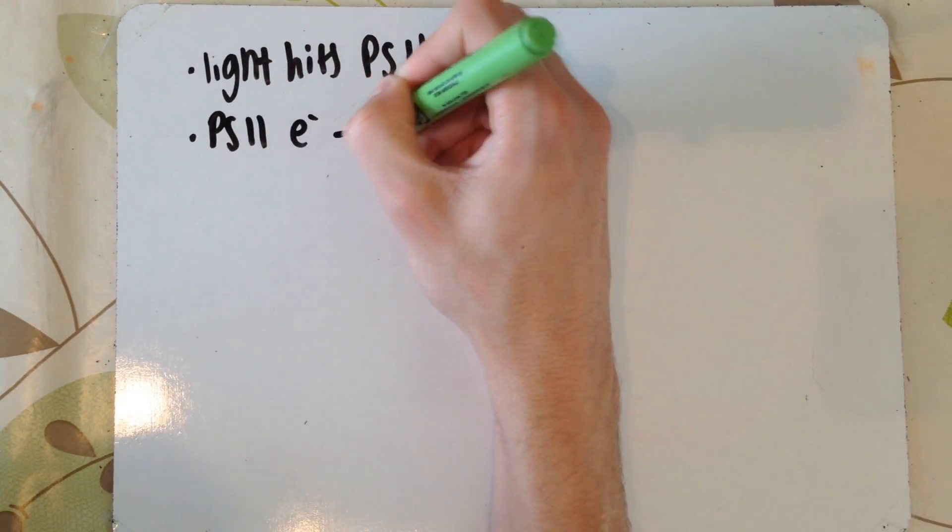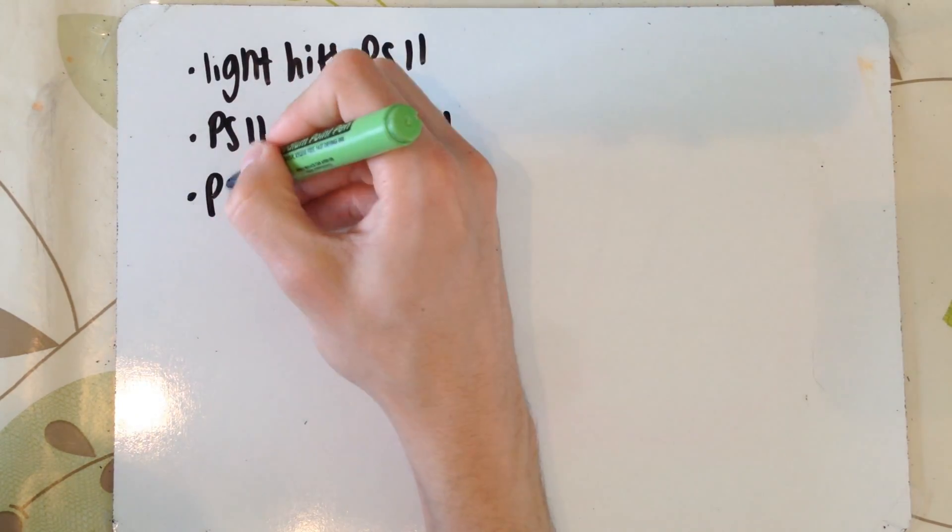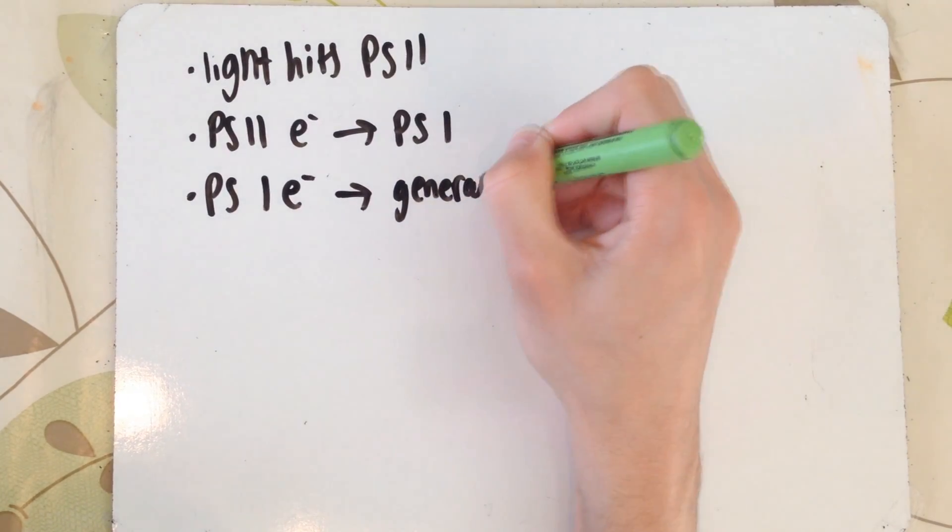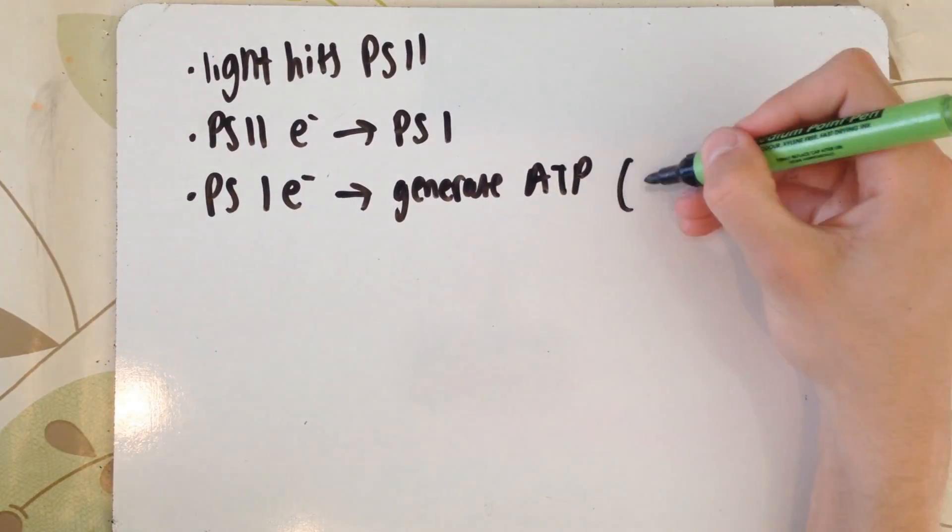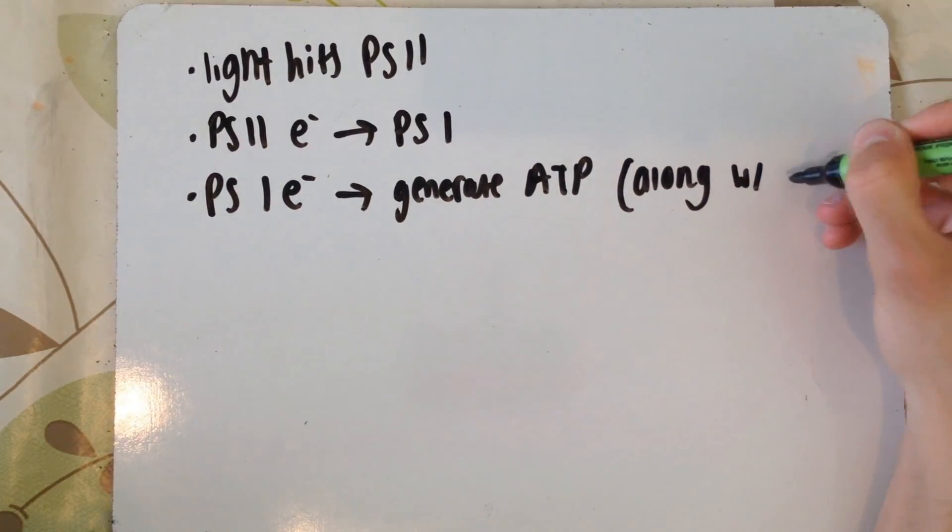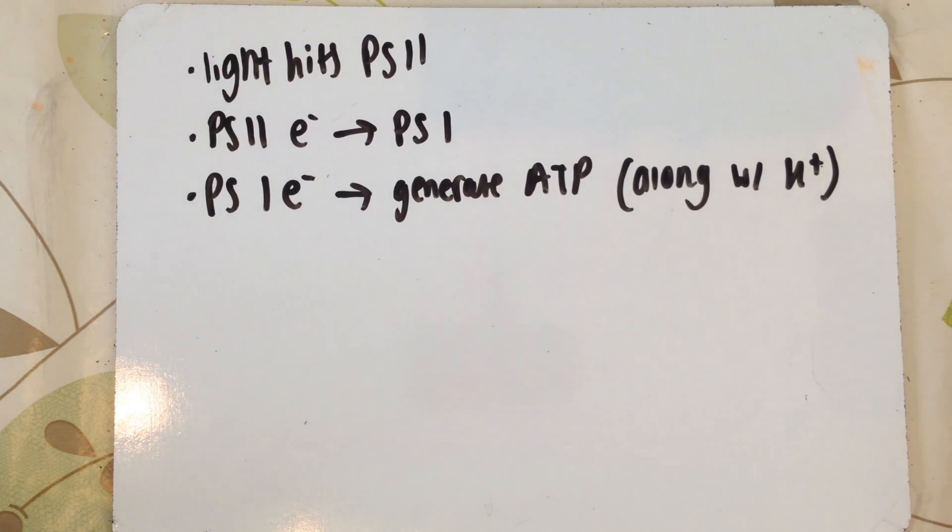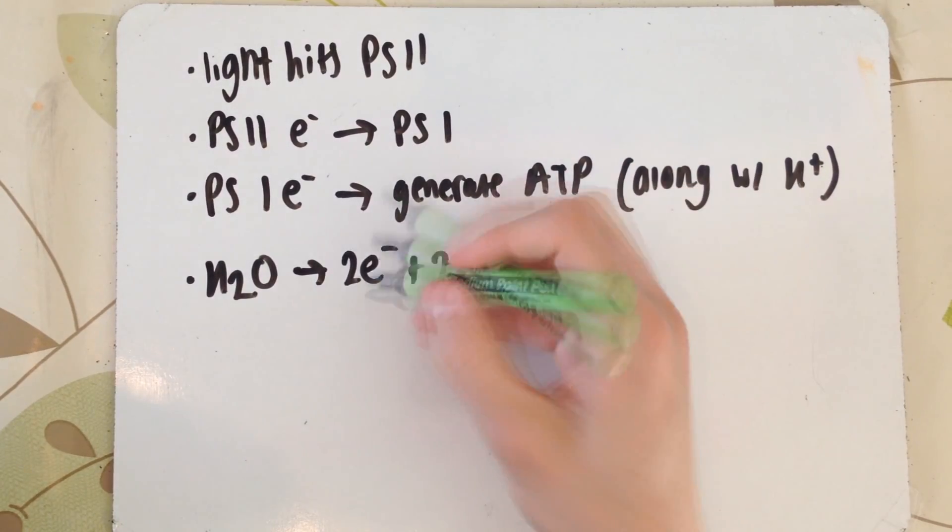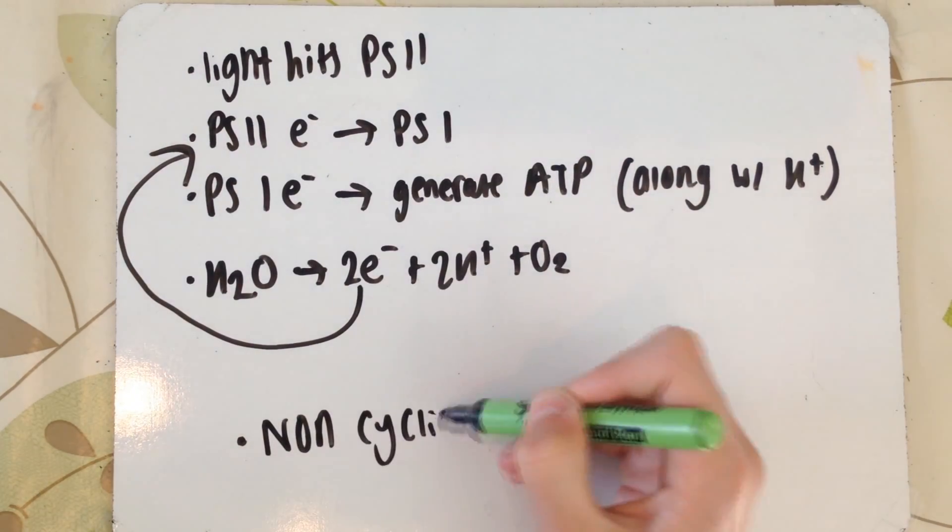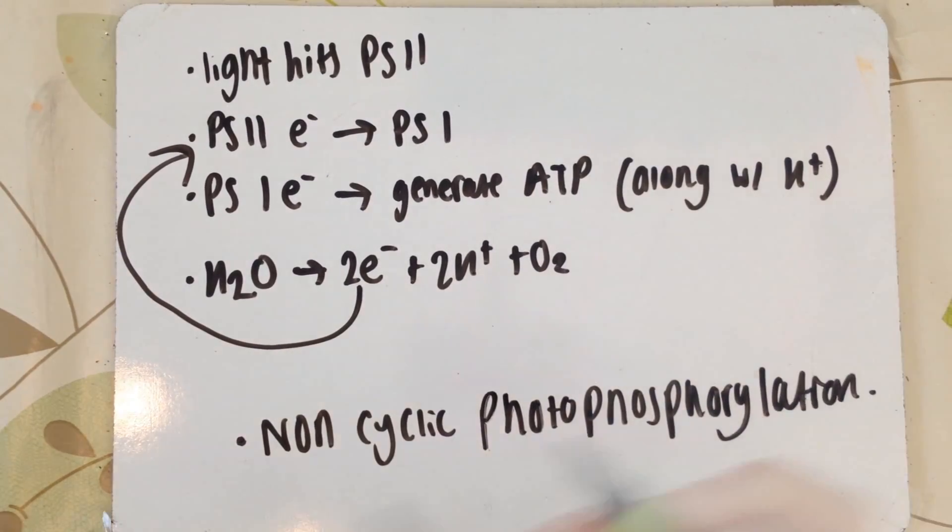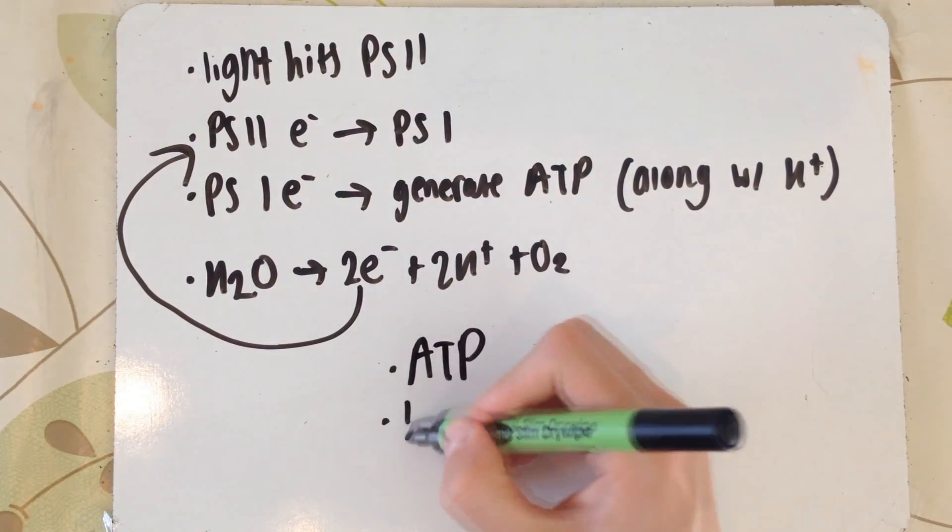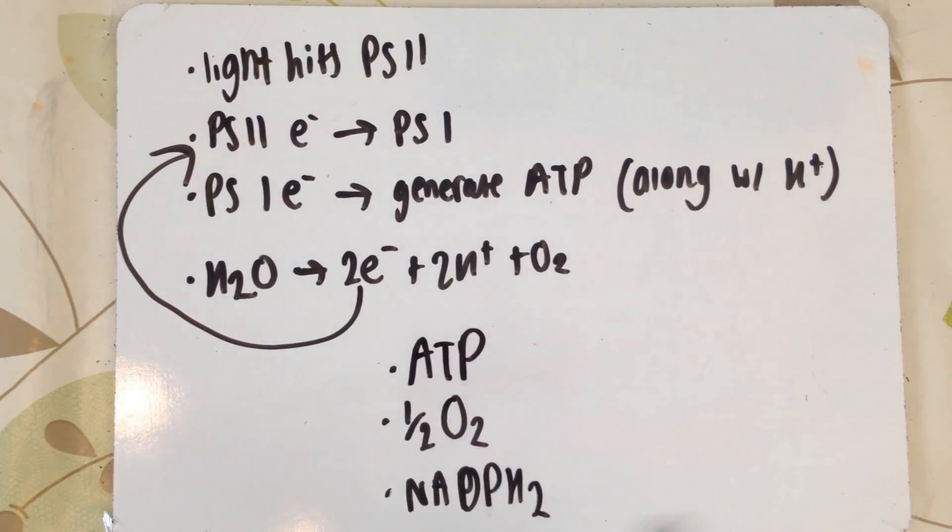Light hits photosystem 2, causing a pair of electrons to leave and travel to photosystem 1. This is because a pair of electrons has also been lost from photosystem 1 because light has also hit it. The electron flow is used to pump H+ across the membrane, which can then go through ATP synthase to produce ATP. The electrons, the H+, and NADP all react together to make reduced NADP. The electrons from the photolysis of water then replace the electrons lost by photosystem 2. The products of this overall is ATP, half molecule of oxygen, and then reduced NADP.